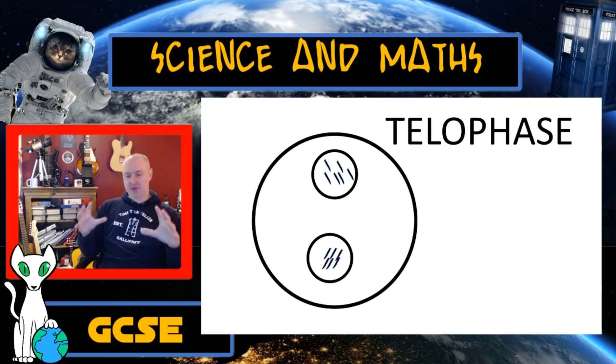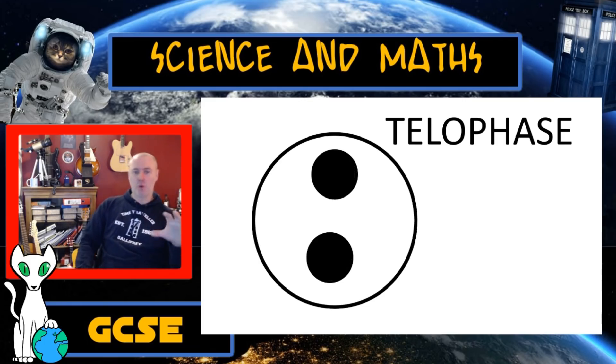Now, we want to take those 46 chromosomes and we want to package them in new nuclei, like this. And once those new nuclei have been formed, we now say we've finished telophase. These two nuclei are going to be genetically identical to each other.